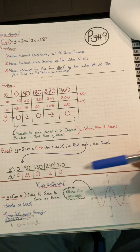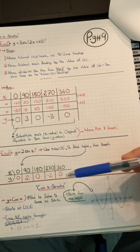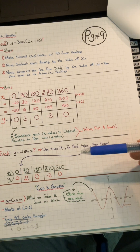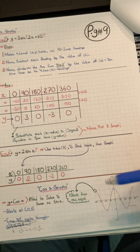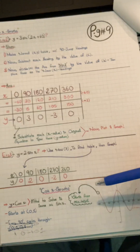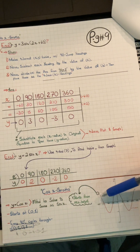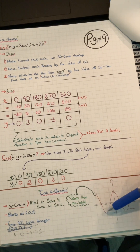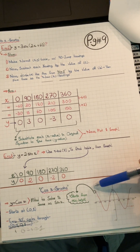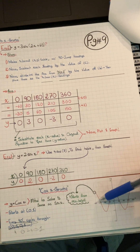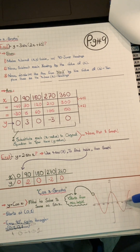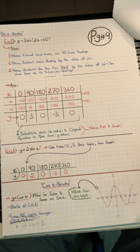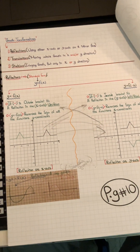I want you to solve the previous example by yourself. Now, for cos graphs, the method is the same as for sin x, but you start differently: maximum, 0, minimum, 0, maximum, 0, minimum, 0, and so on, at every 90 degrees.